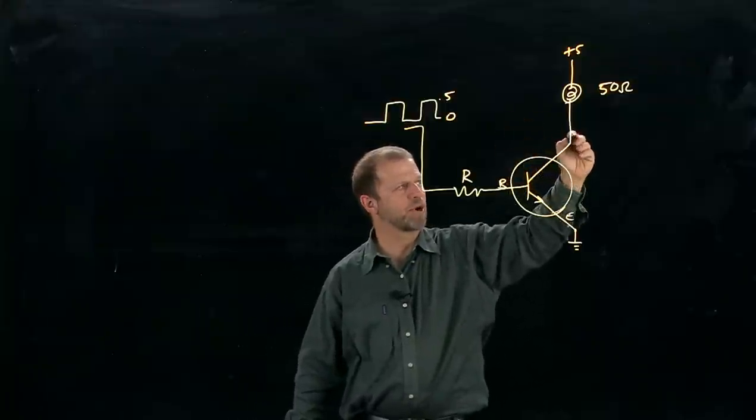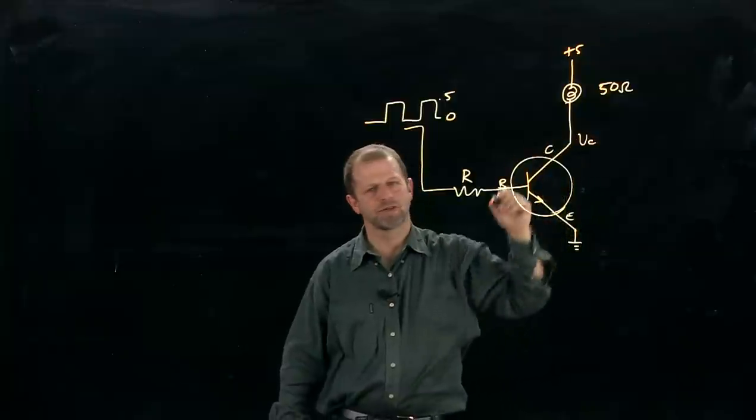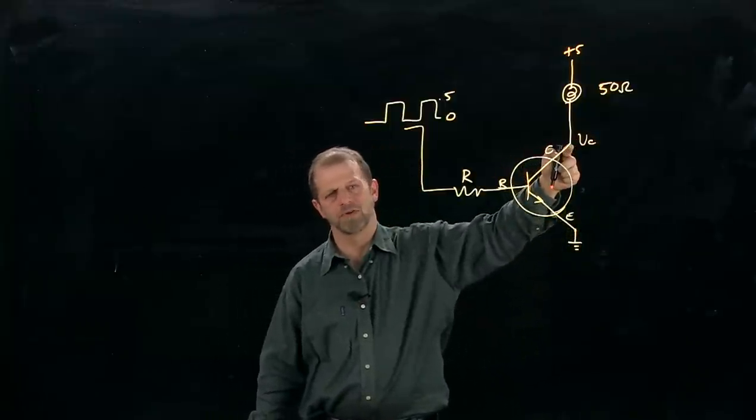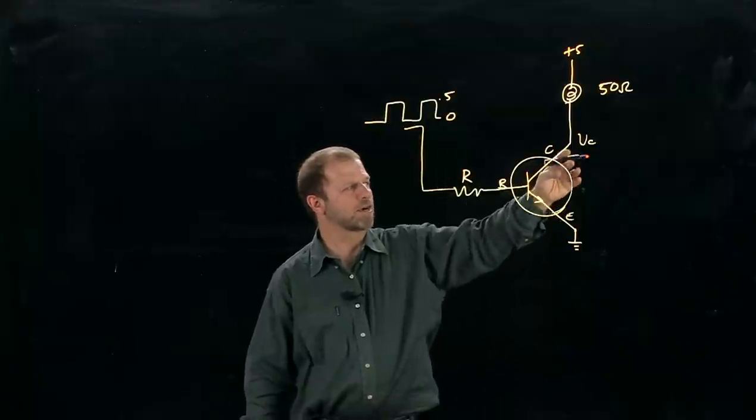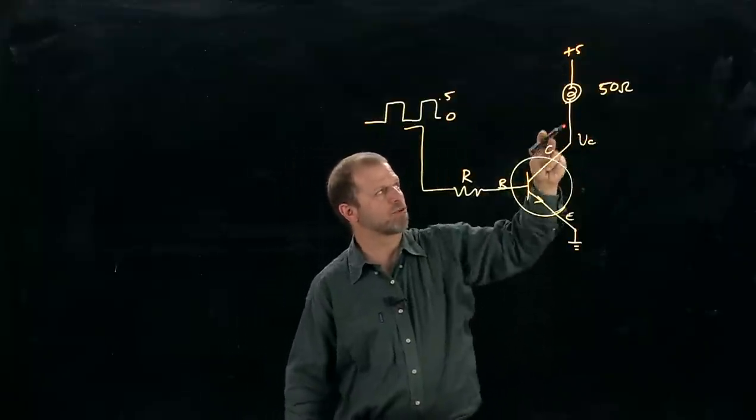The voltage at this point, at the collector of the transistor, can't go any lower than zero. It started out when this transistor was turned off, it started out at five, and there was no voltage across the light bulb.